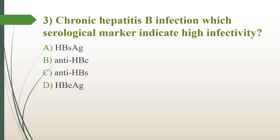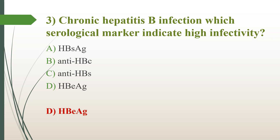Third question: In chronic hepatitis B infection, which serological marker indicates high infectivity? Option A, HBsAg; option B, anti-HBc; option C, anti-HBs; option D, HBe antigen. The answer is option D, HBe antigen. HBe antigen is part of the core antigen of hepatitis B virus. Its presence indicates that the virus is actively multiplying and highly infective.